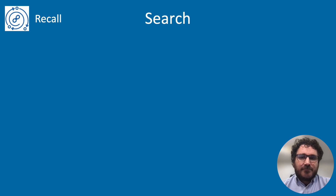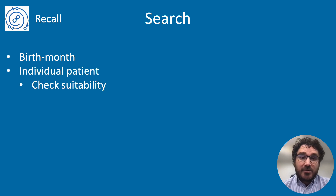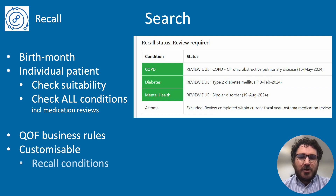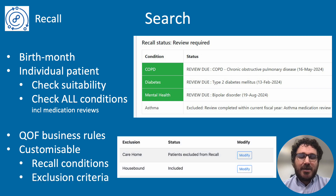The first part of recall is searches — identifying relevant patients. Medlink does this in a unique way. We don't use the clinical system searches at all. Instead, within each individual patient's month of birth, we run our own analysis on their record. For each individual patient, we assess whether they're suitable for recall, what conditions they have, and which of those conditions need review within the fiscal year. These conditions include medication reviews — both general and also pill checks and HRT. All of this logic is based on QOF business rules and is customisable to allow practice control. You can select which conditions are included in your recall system and any specific patient exclusions, such as those registered in a care home or who are housebound. Instead of generating a list of patients, we generate a list of conditions for each individual, and we use this data to create a unique, personalised, multi-morbidity online review for each patient.